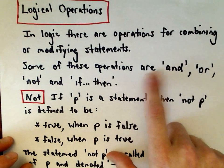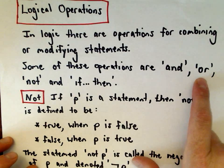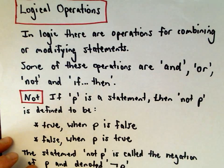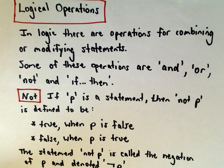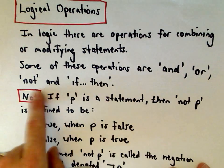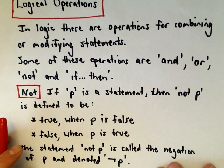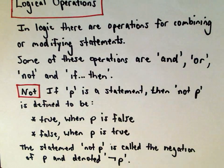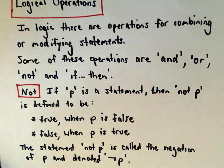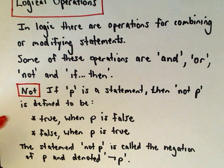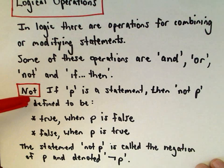We'll talk about and-statements, or-statements, not-statements, and if-then statements, as well as if-and-only-if statements and contrapositive — though those are really just special cases using the other logical operations. All of these have an associated truth value. If you've done truth tables or taken a logic class, you'll encounter this in other settings too, like computer science.